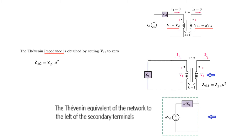This whole primary circuit can be represented at the secondary terminals as a voltage source A·Vs1 in series with an impedance A²·ZG1. This is the equivalent of the primary circuit as seen from the left of the secondary terminals.